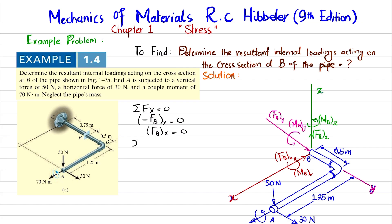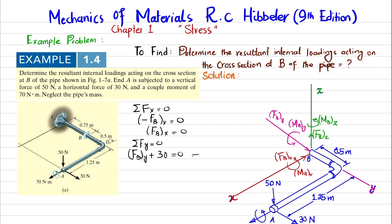Next, the sum of all forces along the Y direction must equal zero. Along Y, one force is the 30 Newton horizontal force and the other is FBY. So FBY plus 30 Newton equals zero, giving FBY equal to negative 30 Newton.